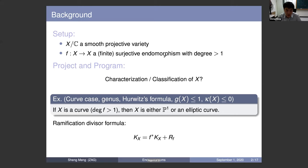The first exercise is the curve case. We can apply the Riemann-Hurwitz formula and see that the genus has to be less than or equal to one, so it is either a smooth rational curve or an elliptic curve. We use the ramification divisor formula: K_X equals the pullback of K_X plus the ramification divisor R_f of f.